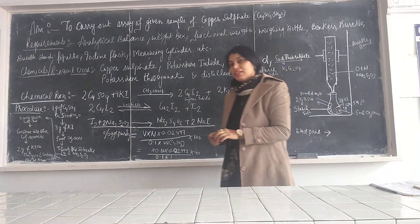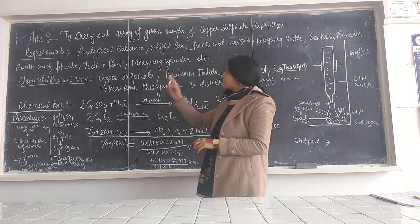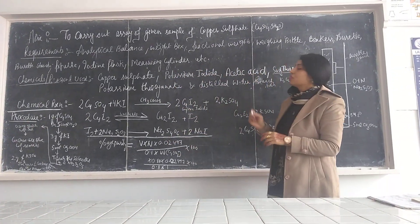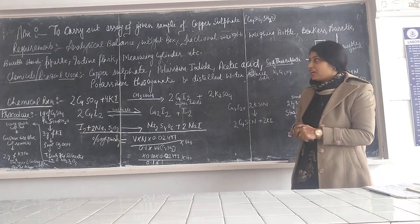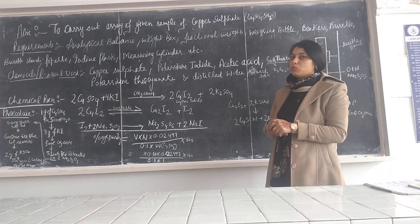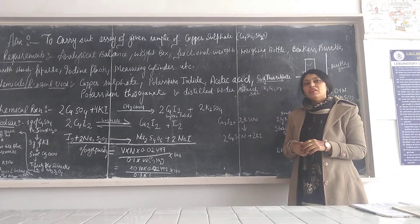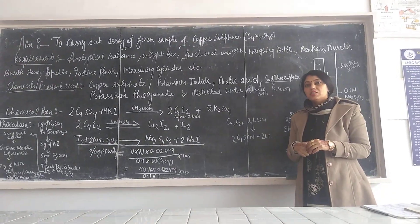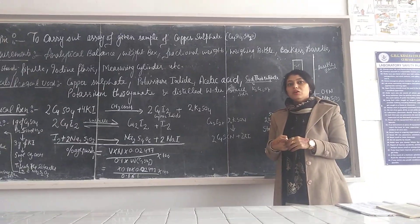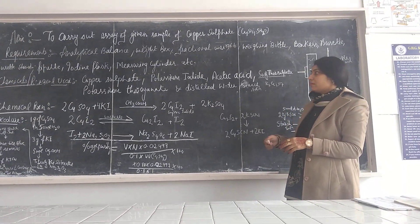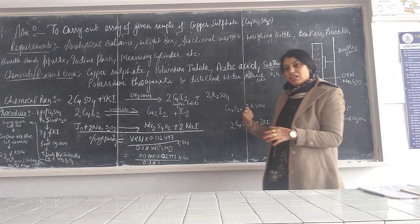Good morning dear students, myself Agitra. Today we will discuss the assay of a given sample of copper sulfate using iodometry. In iodometry, there is first a liberation of iodine which is further titrated with our sodium thiosulfate solution.